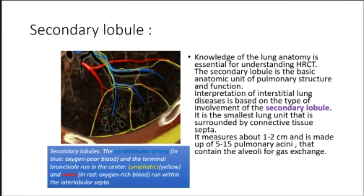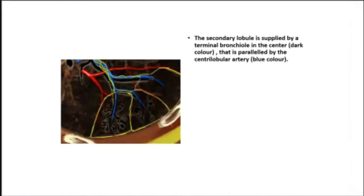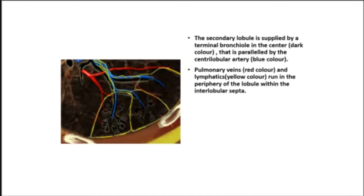Knowledge of lung anatomy is essential for understanding HRCT. The secondary lobule is the basic anatomic unit of pulmonary structure and function. It measures about 1 to 2 centimeters and is made up of 5 to 15 pulmonary acinae that contain the alveoli for gas exchange. It is supplied by a terminal bronchiole in the center, paralleled by the central lobular artery.